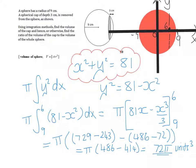Now what I've worked out there is the volume of the cap. So this part of the sphere that's been removed. And so I've answered this part of the question. Using integration methods find the volume of the cap, done.